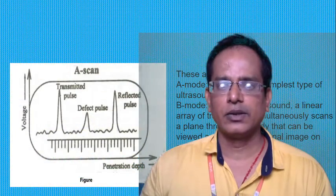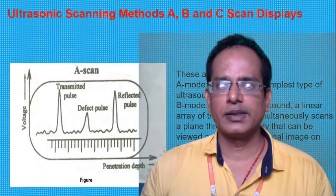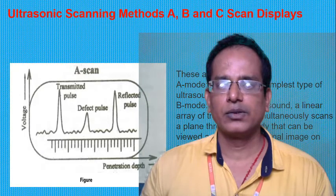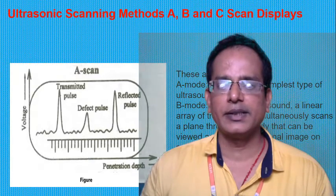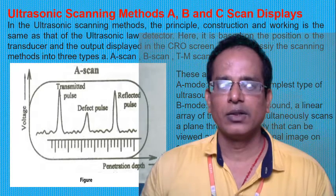We'll discuss these one by one. There are many kinds of scanning display units. In ultrasonic scanning methods, the display techniques are called A-scan mode, B-scan mode, and C-scan mode. These three types of modes are available to capture images of internal organs with different principles, construction, and beam focusing. So in ultrasonic scanning method, we have three types: A-scan display, B-scan display, and C-scan display.